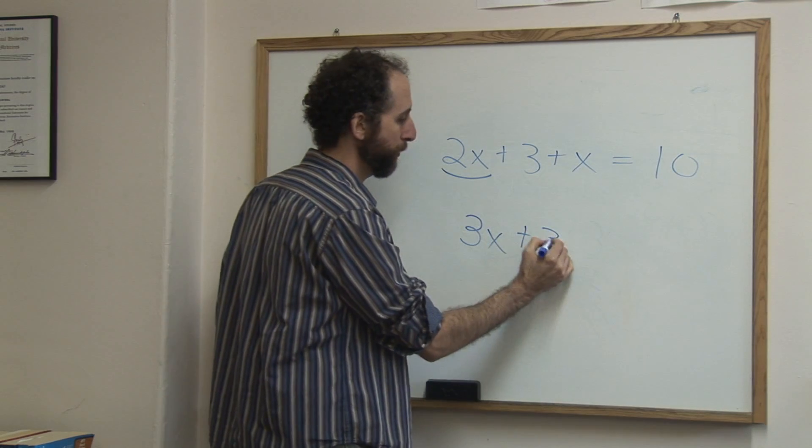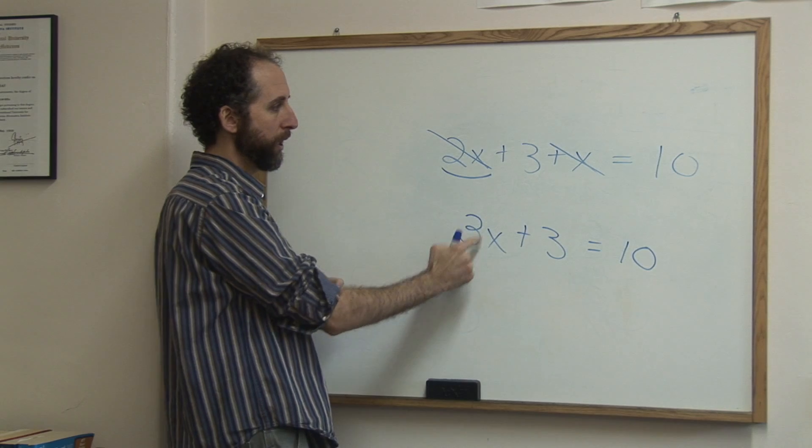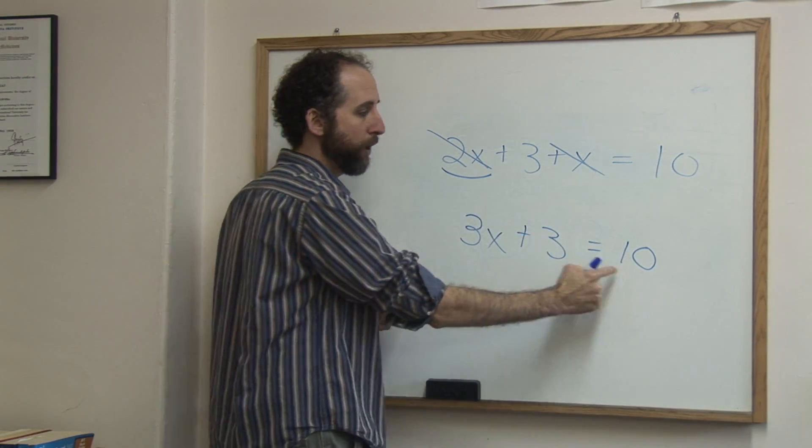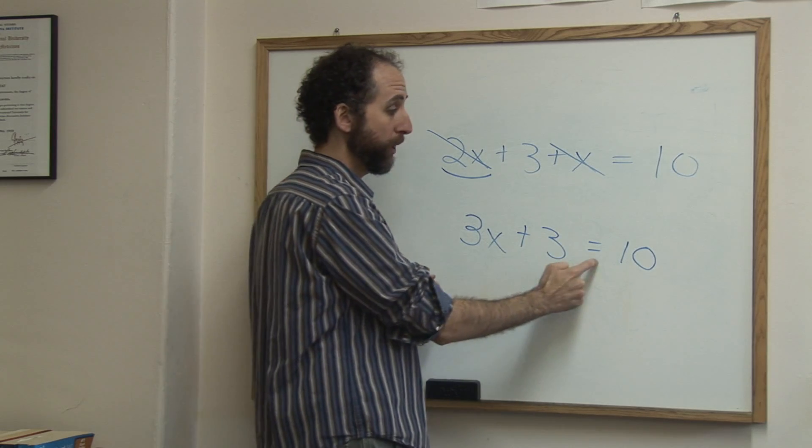And we're going to drop the 3 and the equals 10. So we combine this and this to give me 3x. And these guys didn't get touched so they get dropped straight down. We use them again. We now have 3x plus 3 is 10.